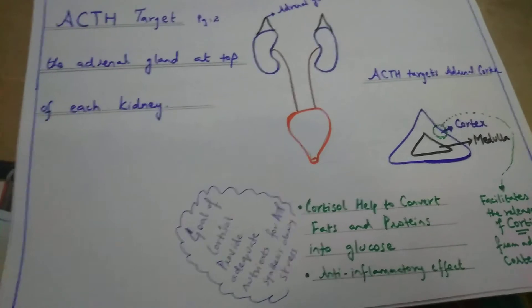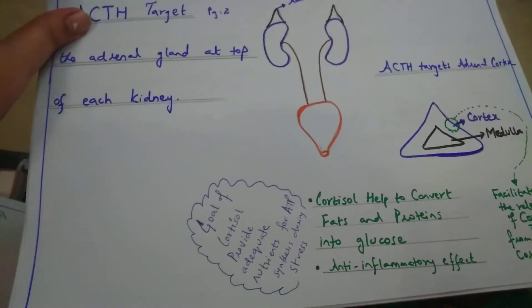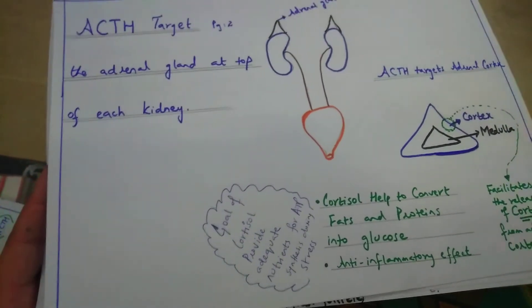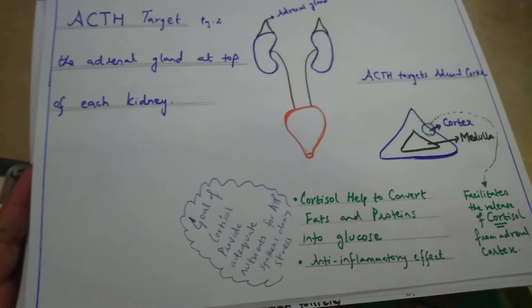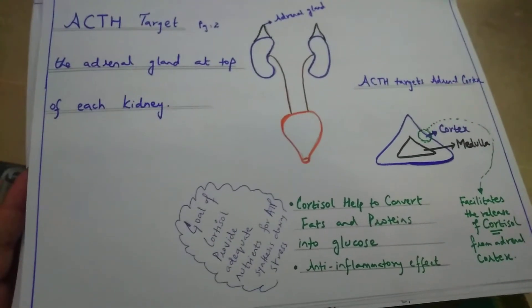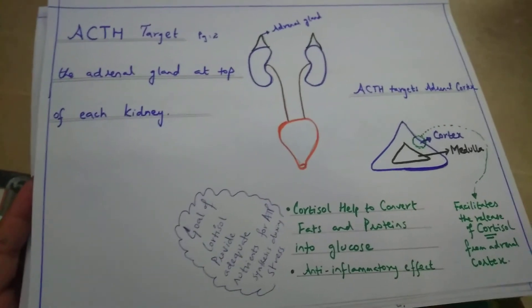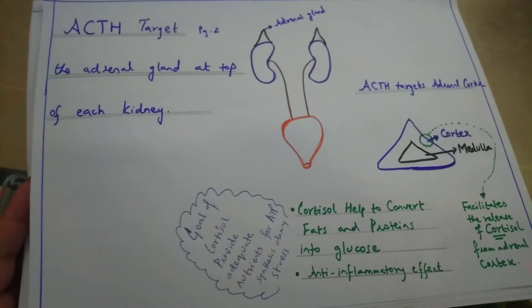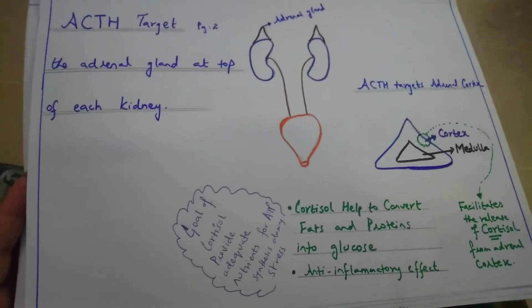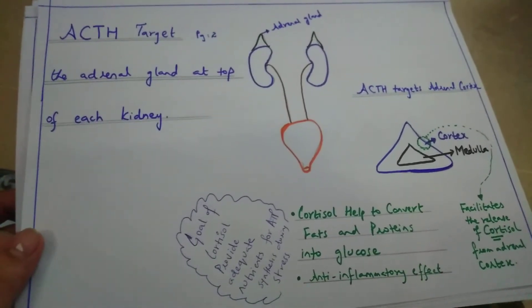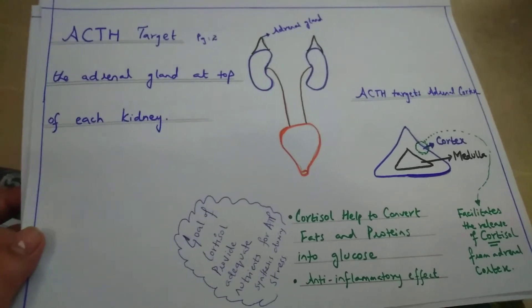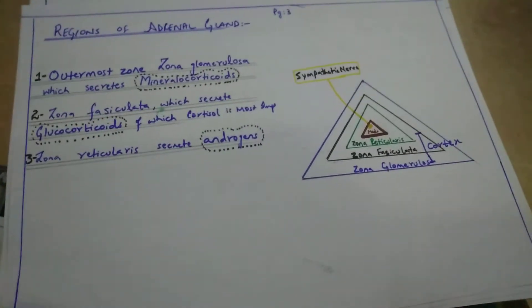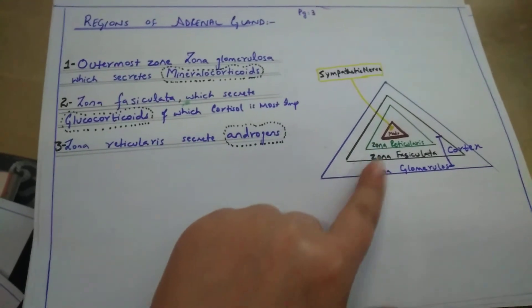The adrenocorticotrophic hormone targets the adrenal cortex — this is important from an MCQ point of view. After circulating in the blood, hormones only go to those cells which have the specific receptors for them. Always remember: when a receptor is present on a specific cell, only there will the hormone perform its action.